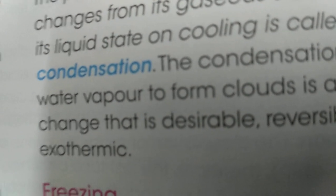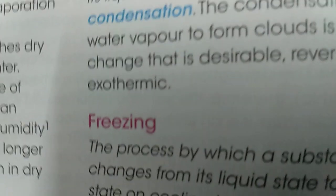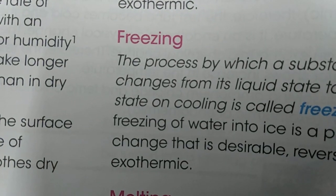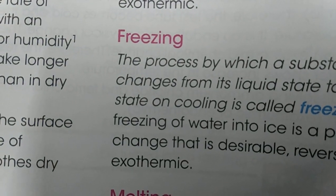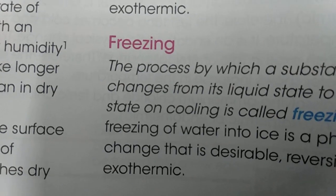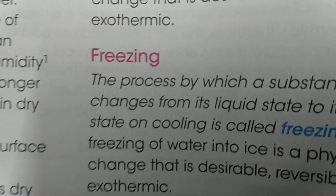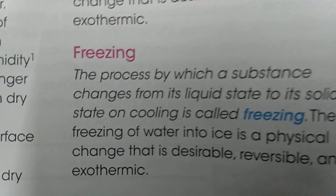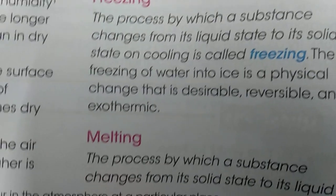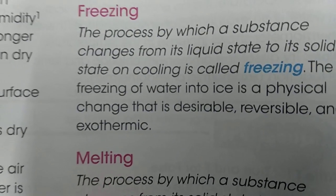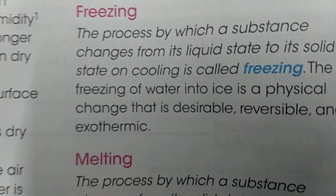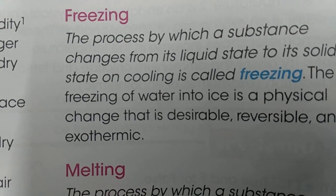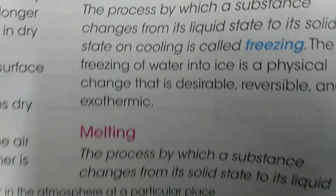It is desirable, reversible, and exo-permable. Freezing is a process when a substance from its gaseous state changes to solid state. On cooling, it is known as freezing. Example: freezing of ice is a physical state. Reversible, desirable, and exo-permable.